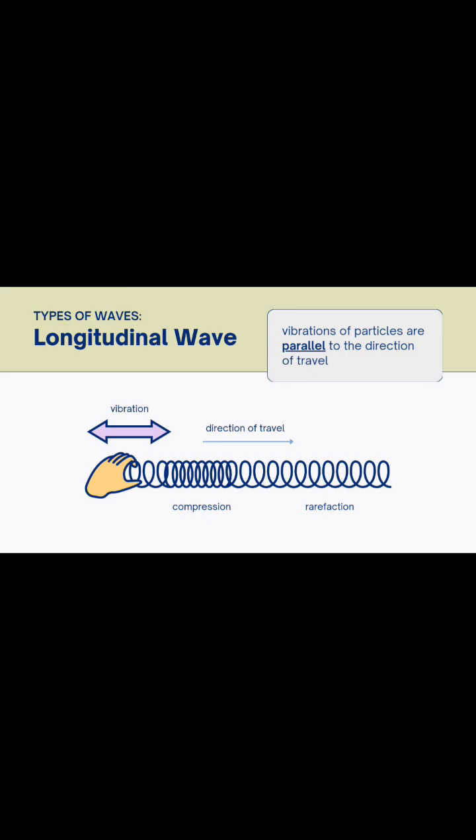Think of a slinky being pushed and pulled along the floor. The coils move back and forth in the same direction the wave travels. Examples of longitudinal waves include sound waves, compression waves in a spring, and P waves during an earthquake.